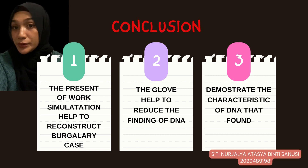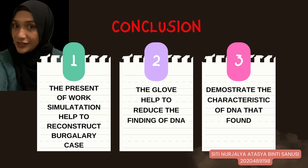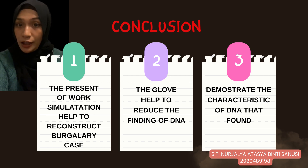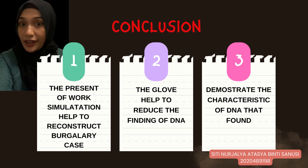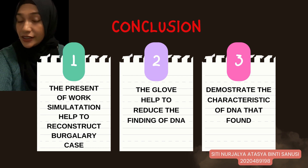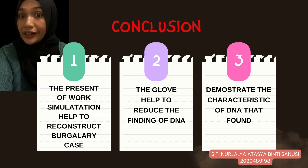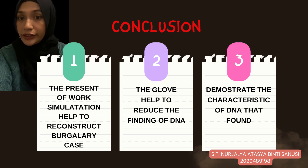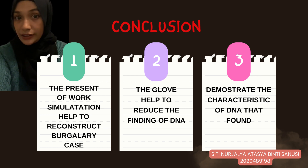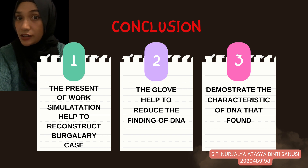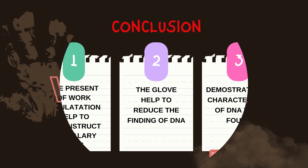In conclusion, the burglary simulation helped to construct the case scenario. Gloves helped to reduce the DNA evidence recovered. This research emphasizes that there are two examples of how one can assess results given the possibility of indirect transfer of minute DNA quantities. The study also emphasizes the need to evaluate DNA results considering that the person of interest may have a legitimate reason that could explain their presence at the activity level.